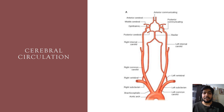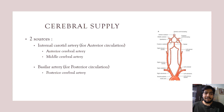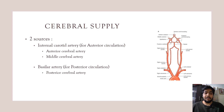This diagram shows the cerebral circulation, describing the various arteries which supply the brain and the circle of Willis, which is formed at the base of the brain. There are two sources of cerebral blood supply: the first is the internal carotid artery, which provides the anterior circulation and gives rise to the anterior and middle cerebral arteries. The second source is the basilar artery, which provides the posterior circulation and gives rise to the posterior cerebral artery.